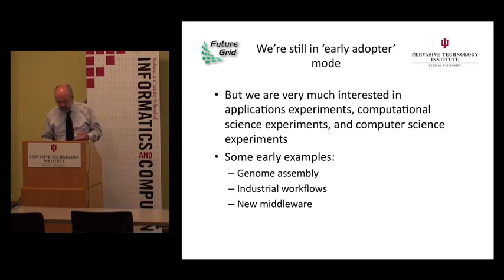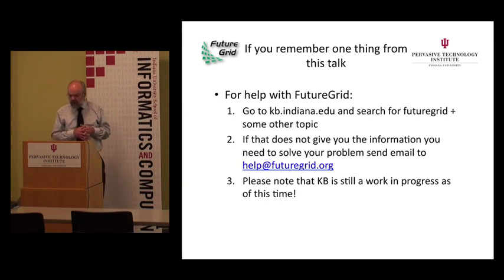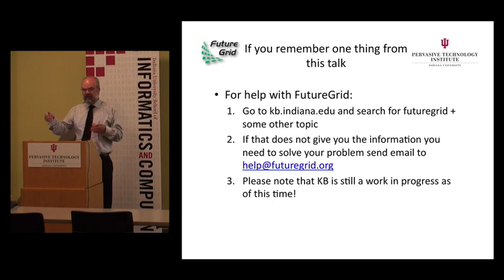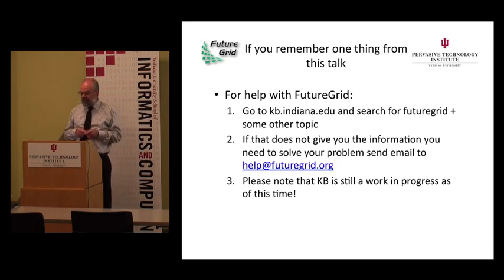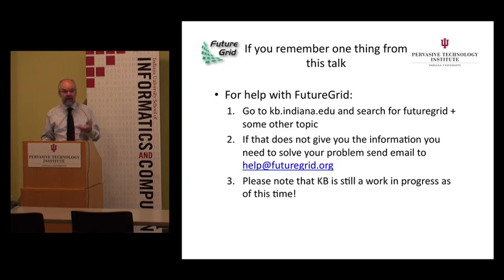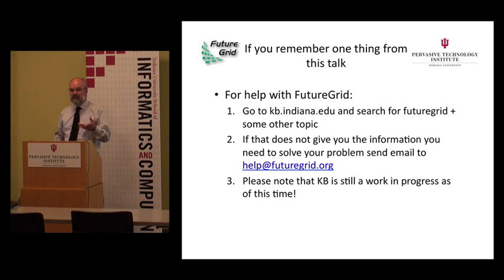This is the one slide that really matters in my entire talk. One: go to kb.indiana.edu and search for information about FutureGrid — just type 'FutureGrid' and something, like 'FutureGrid account' or 'FutureGrid Eucalyptus.' The other really critical thing is: if you need help, send email to help@futuregrid.org. That is staffed by a team of experts at Indiana University who will aid you in solving any problems. The early adopters have been very valuable in helping us work out what we need to deliver.